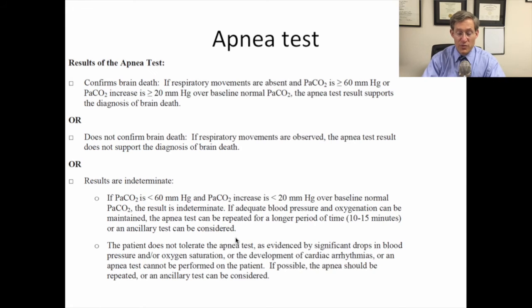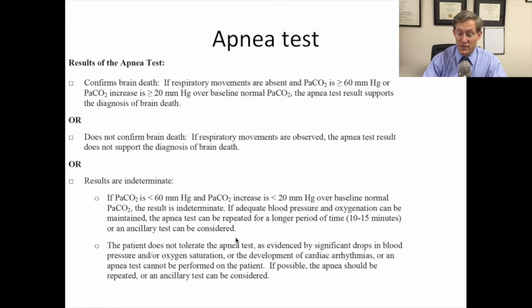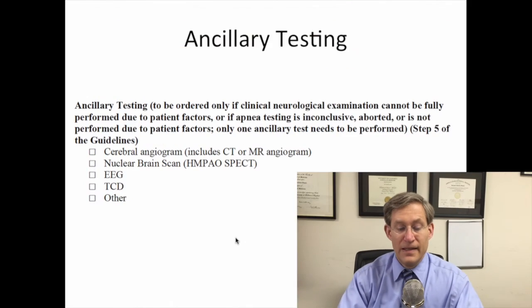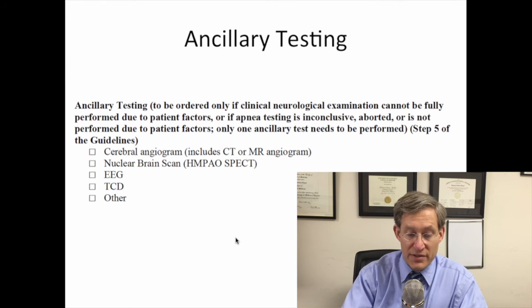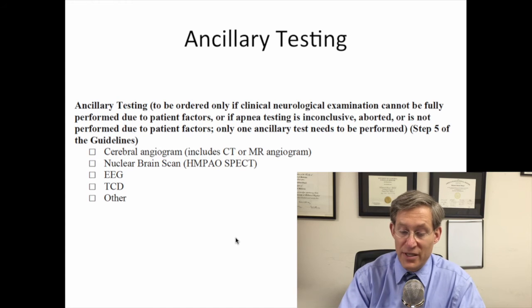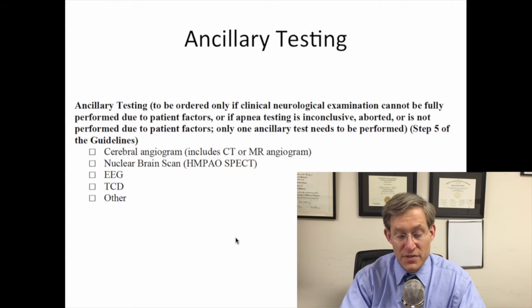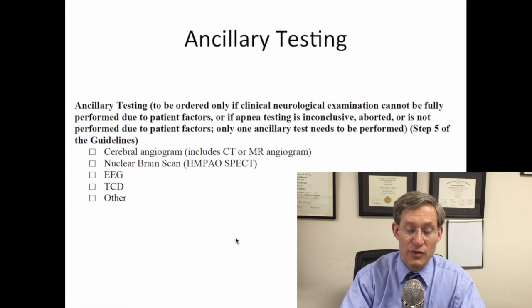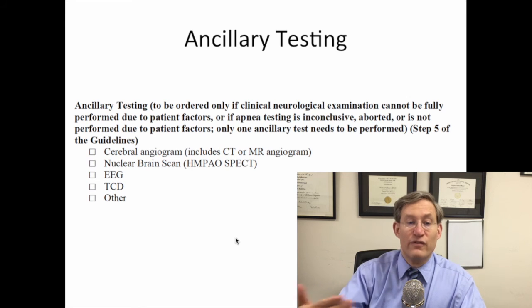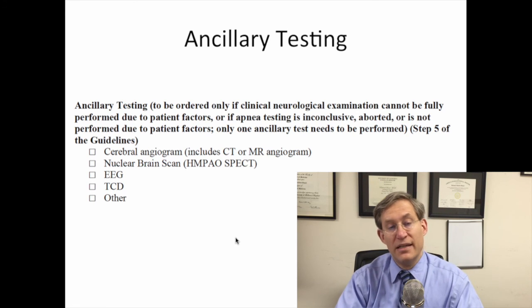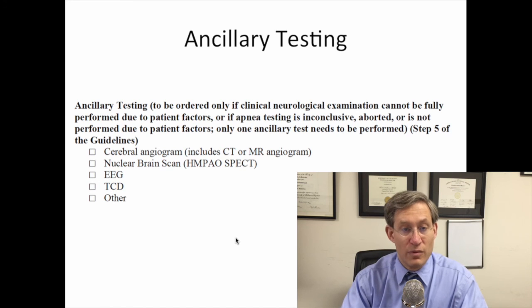The apnea test is indeterminate if either the pCO2 does not rise, or the patient is unable to tolerate the apnea test due to hypoxemia or hemodynamic instability. If respiratory efforts are observed, the apnea test does not support the diagnosis of brain death. Ancillary testing should be ordered only if the clinical neurological examination cannot be fully performed due to patient factors, or if apnea testing is inconclusive, aborted, or not performed due to patient factors. Ancillary tests per the guidelines include cerebral angiogram, nuclear brain scan, cerebral scintigraphy, EEG, or transcranial Dopplers. Each hospital will likely have a preferred test. Cerebral angiogram and cerebral scintigraphy appear to be the most straightforward options.